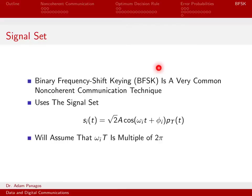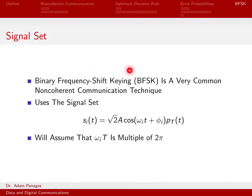Binary frequency shift keying uses this signal set. The ith signal is square root of 2 times A cosine of omega_i times t plus phi_i, time-limited on 0 to T. Nothing happens with the cosine amplitude as a function of the signal — everything having to do with information is stored in the frequency, as expected for a frequency shift keying scheme. There are two signals: i equals 0 and i equals 1, with frequencies omega_0 and omega_1 and phases theta_0 and theta_1.